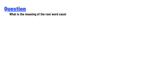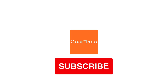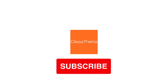The root word 'caust' comes from the Greek 'kaustikos,' meaning 'burning' or 'able to burn.' It is often used in words related to burning or corrosive substances, such as 'caustic.' This is the correct answer to the question.